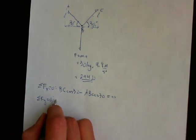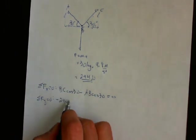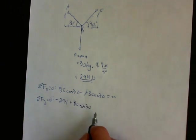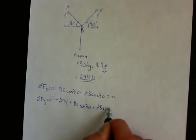Negative 294, negative because it's going down, plus BC sine 30 plus AB sine 30 equals zero.